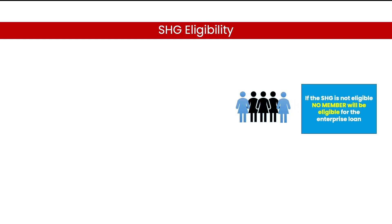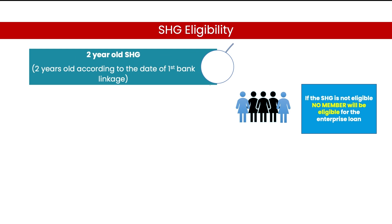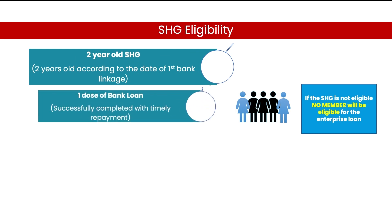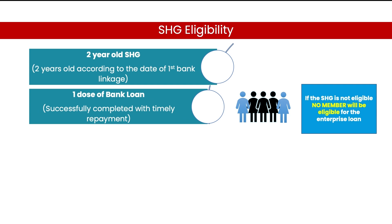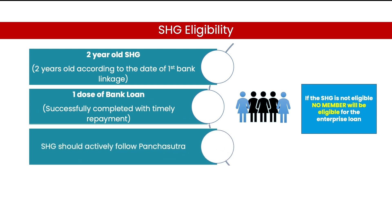SSG Eligibility Criteria. A member can be selected for individual micro-enterprise loan only if she belongs to an SSG that fulfils the eligibility criteria. The SSG eligibility criteria include the following: 1. SSG must be 2 years old from the date of first bank linkage. 2. Must have fully repaid at least one cycle of bank loan without any overdue. 3. Must follow Panchasutra.